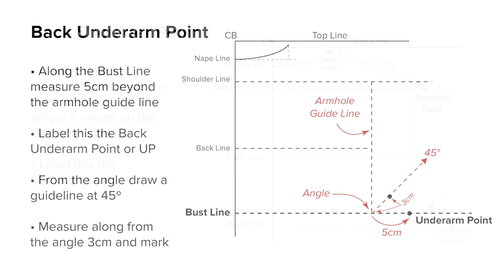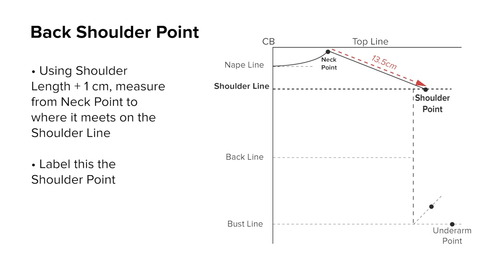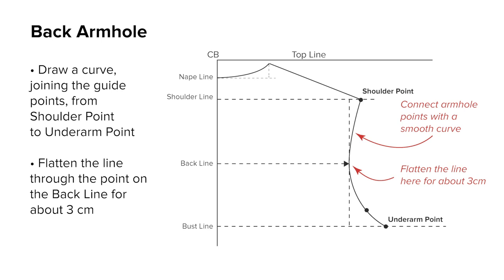The back shoulder point. From the back neck point, draw a line equal to the shoulder length measurement plus 1 centimeter to wherever it meets the shoulder line. Complete the back armhole by drawing a curved line from the shoulder point to the underarm point, flattening through the point on the back line for about 3 centimeters.